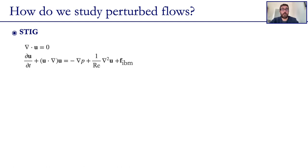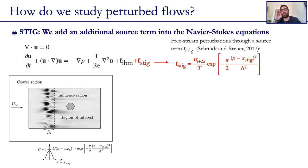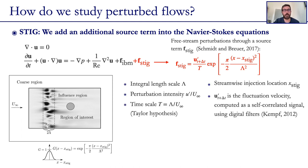We are interested, however, into studying perturbed flows. And for that we have tackled two different approaches. First of them is STIG, that stands for Synthetic Turbulence Inflow Generator, and basically consists of adding an additional source term into the Navier-Stokes equation, following the work of Schnitz and Broger, and that depends on the integral scale of the perturbations that we want to input, the intensity, the time scale by Taylor hypothesis, because these perturbations are being convected downstream, the streamwise location, and the fluctuation velocity, most importantly, which is computed using digital filters based on the work of Klein and Kempf, and basically ends up being a self-correlated signal. The other approach we have tackled is basically generating turbulence induced by a passive grid, which in our method is basically represented using Lagrangian points.